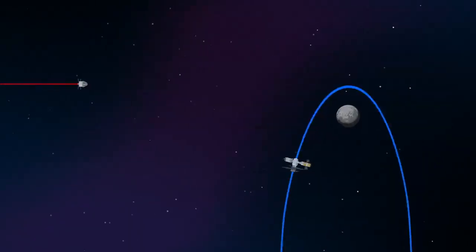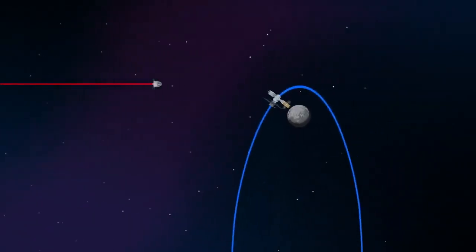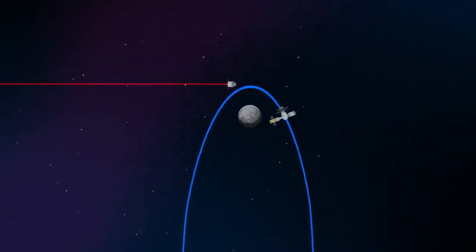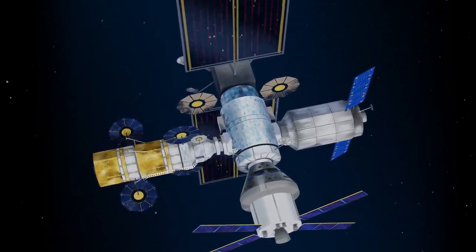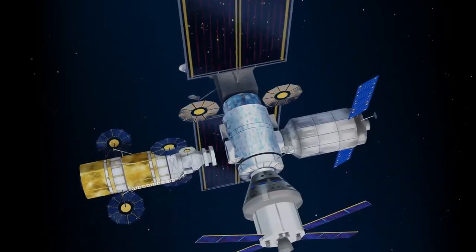Returning to our crew as they approach Gateway, the Orion must match the elliptical orbit of the station in order to successfully dock. Once on board, pre-selected crew members transfer to the lunar lander, while those assigned to Gateway remain on station.